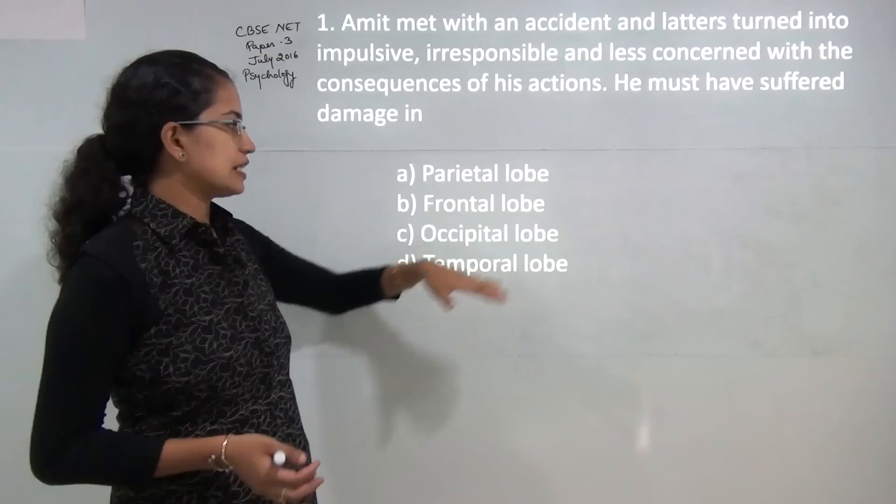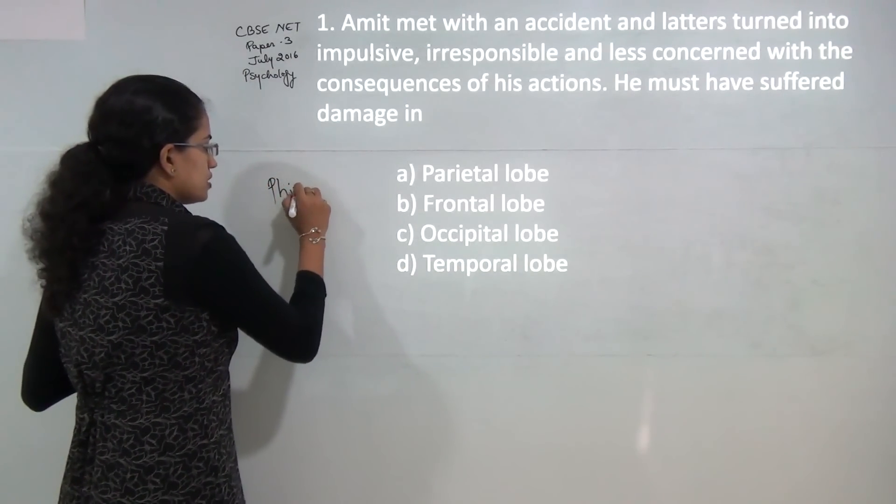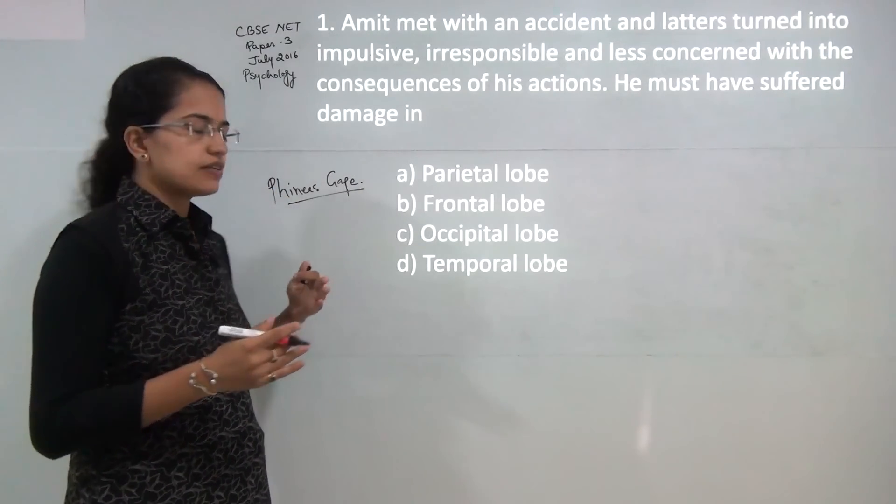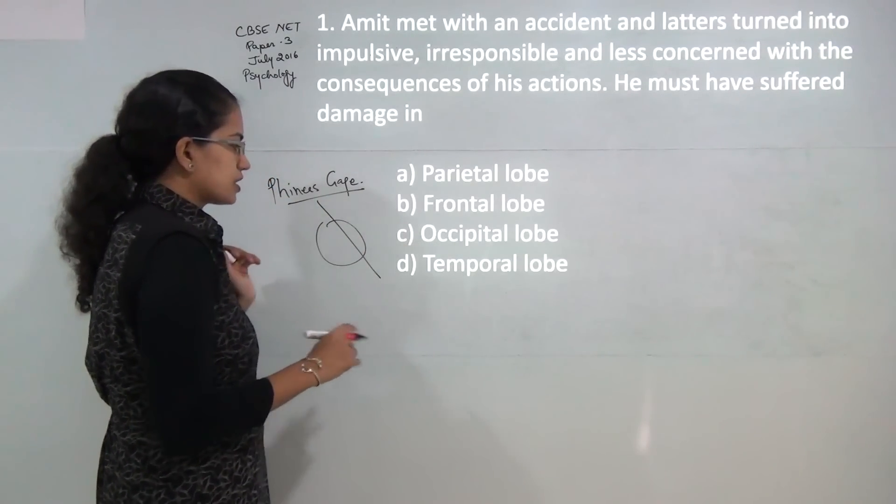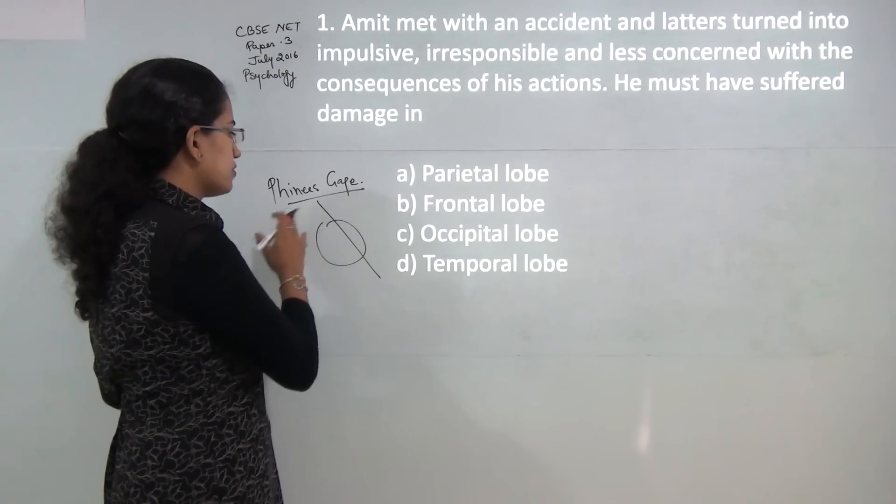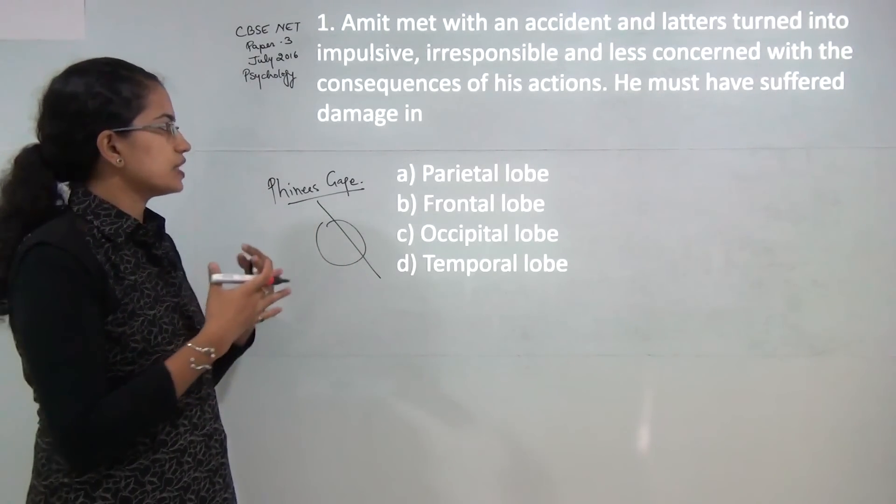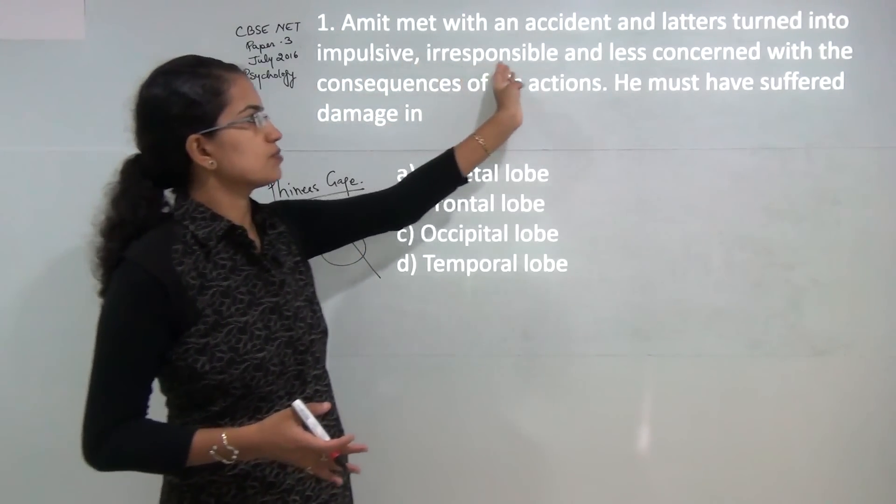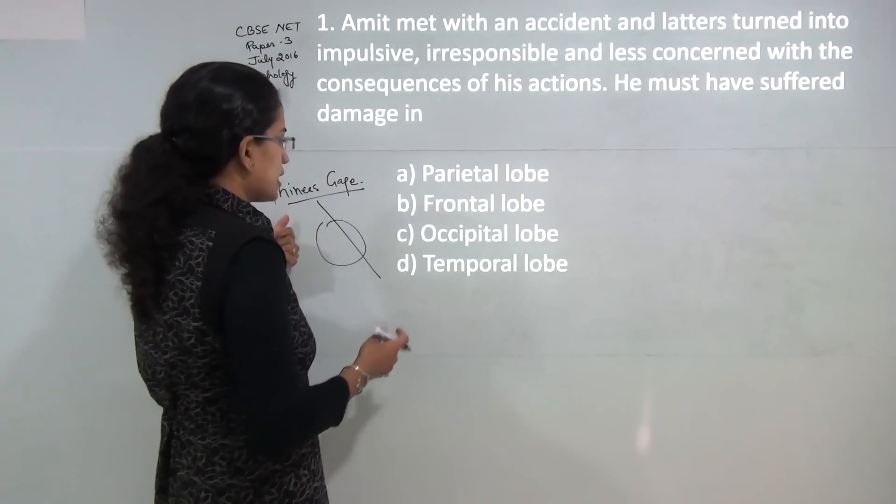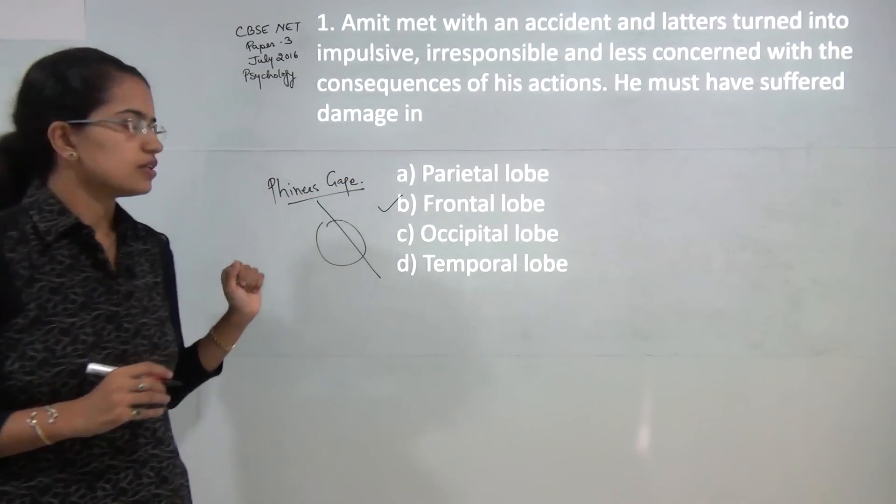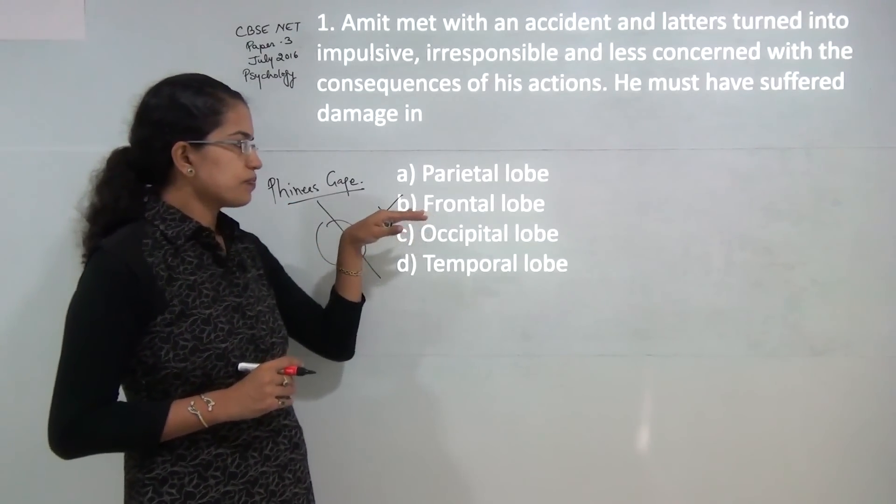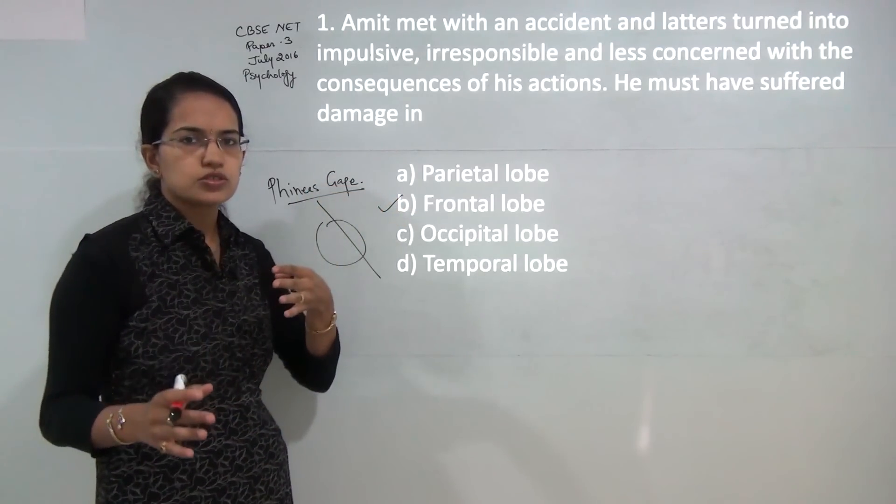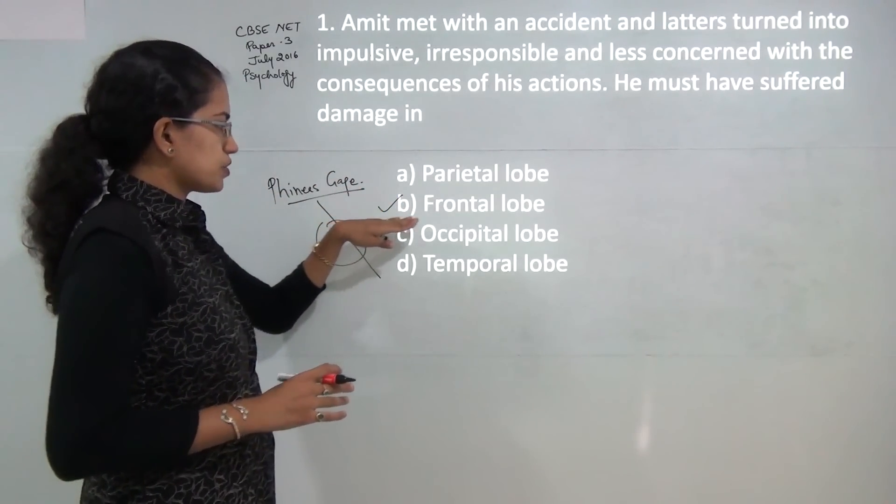This question is directly related to the Phineas Gage experiment. Phineas Gage was a factory pub worker, and before he met an accident where a tamping rod went through his frontal lobe, he was a very honest, very sincere person. Later on, after this accident, he turned into an impulsive, irresponsible, and less concerned person. The main damage was to the prefrontal cortex in the frontal lobe. So the answer would be the frontal lobe.